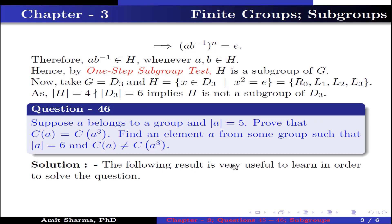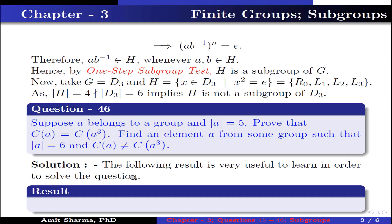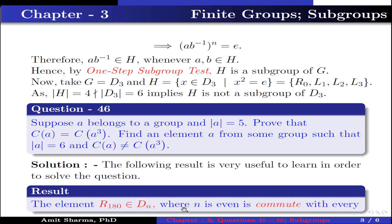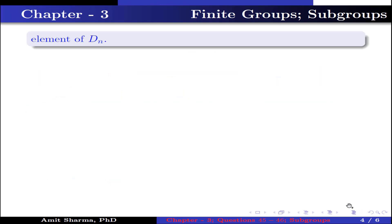The following result is very useful to learn in order to solve this question: the element R180 belongs to Dn, when n is even, commutes with every element of Dn. We also know that the centralizer of A equals the set of x belonging to G such that xA equals Ax.